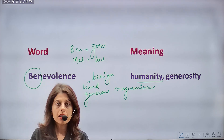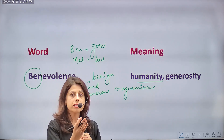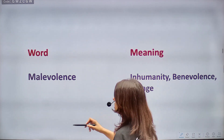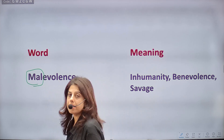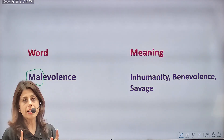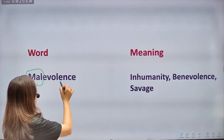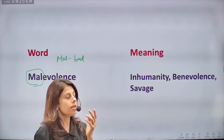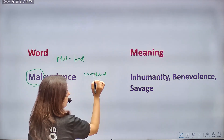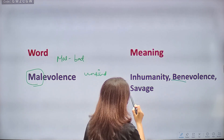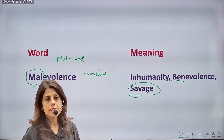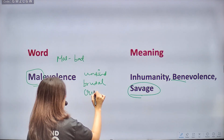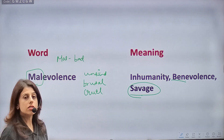The opposite of benevolence is MALEVOLENCE — because 'ben' means good and 'mal' means bad. Synonyms of malevolence are all negative words: unkind, inhumanity, savage. Savage means cruel, brutal. Other synonyms: cruel, brutal. This ben/mal pair appears very frequently in exams.